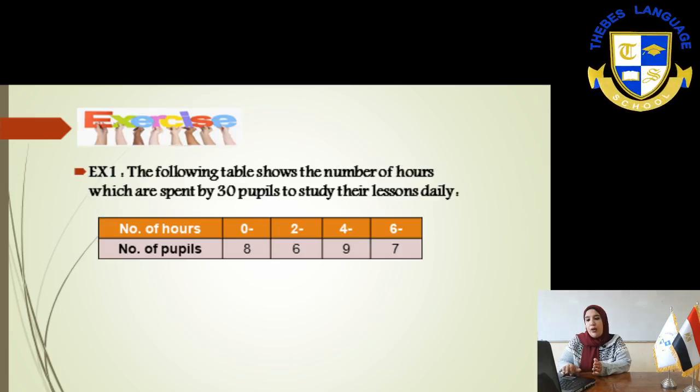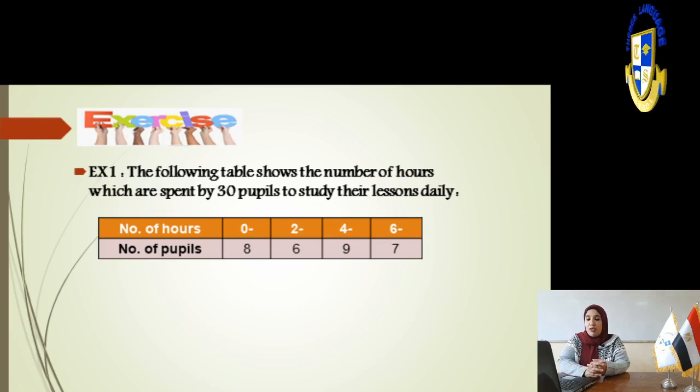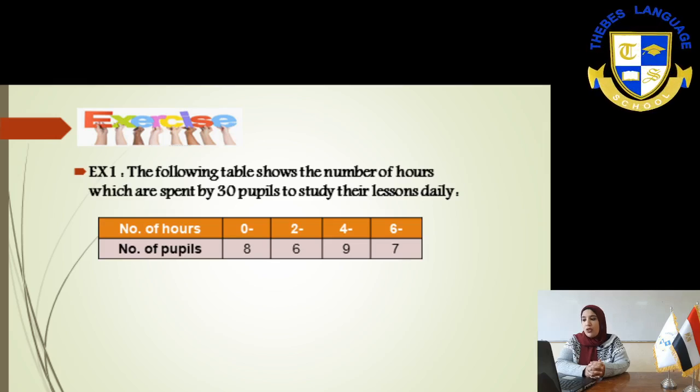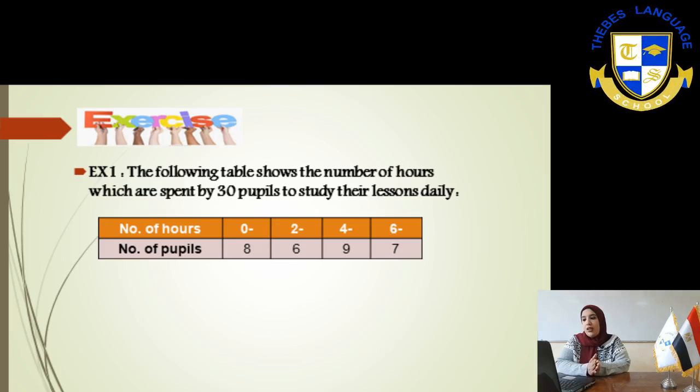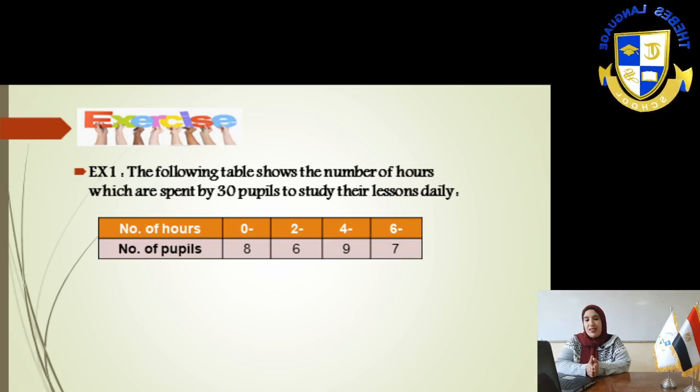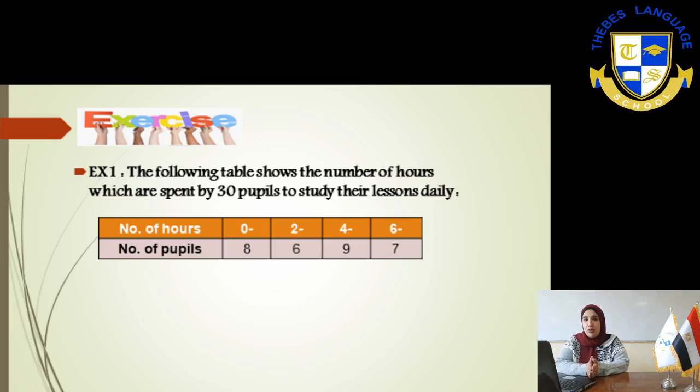Here we will learn how can we use this. In this exercise, the following table shows the number of hours which are spent by 30 students to study their lesson daily. The number of hours, 0 dash, it means from 0 to 2.